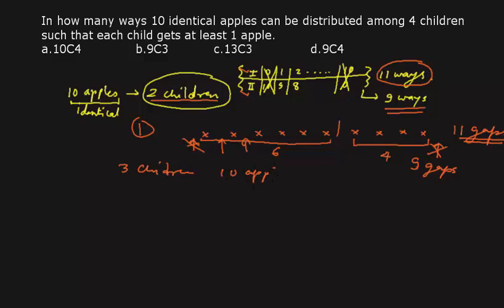Now expanding this logic: if there are three children and 10 identical apples, I need to make three partitions, which requires two sticks. For example, placing one stick after the third apple and another after the eighth apple divides the 10 apples into parts of three, five, and two — one part for each child.